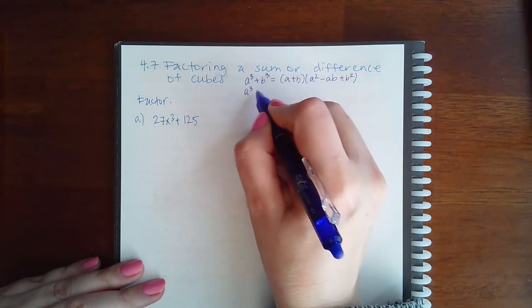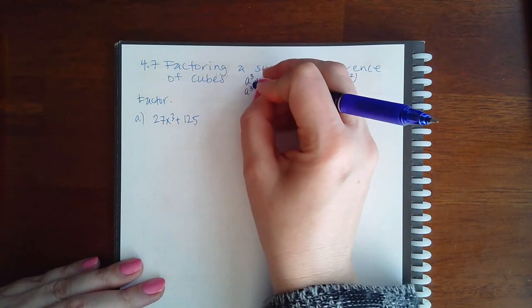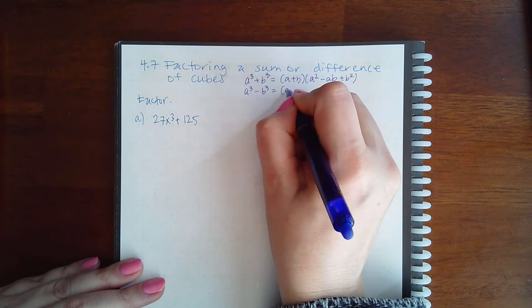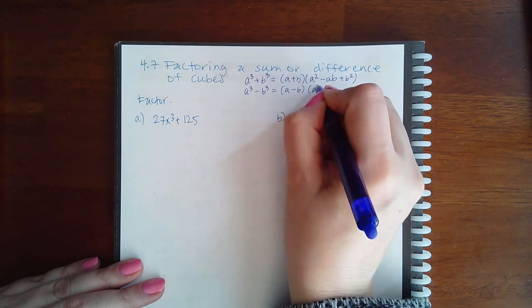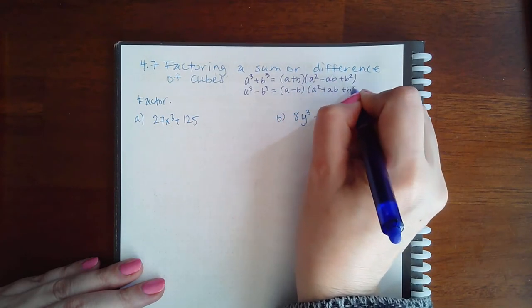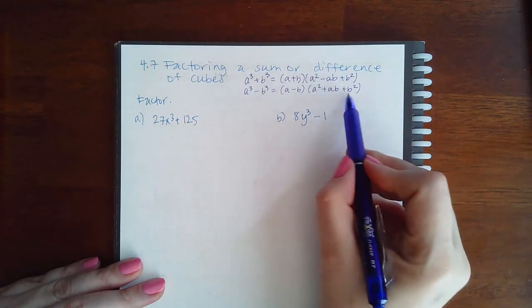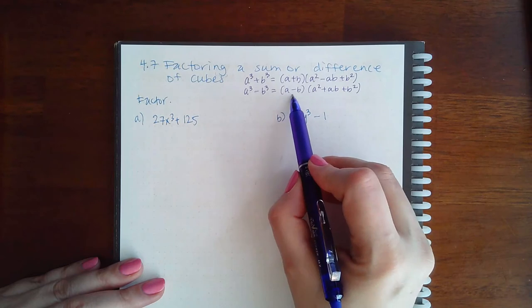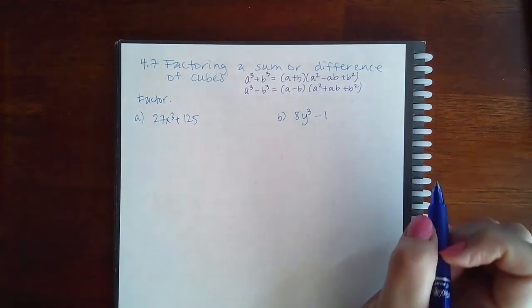The same with the cube, with the difference of cubes. You get a minus b and then a squared plus ab plus b squared. So again, this longer factor can never be factored further. You're only going to see if this first factor can be factored further.